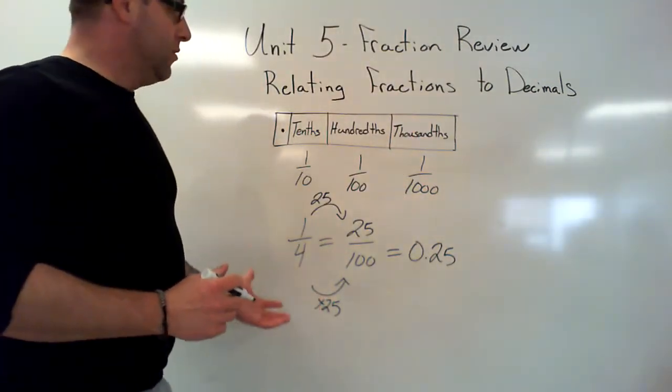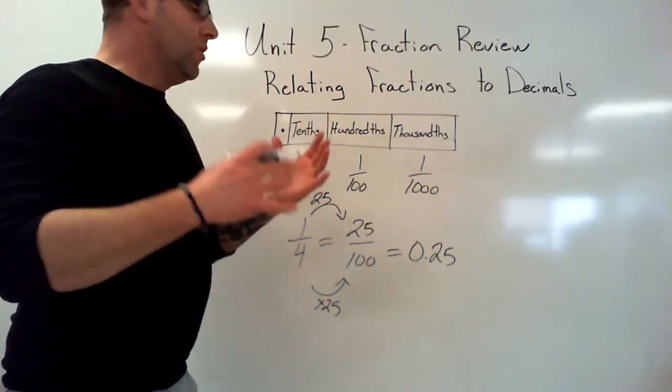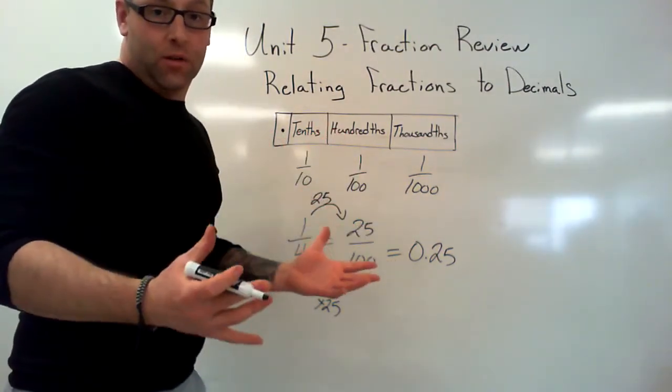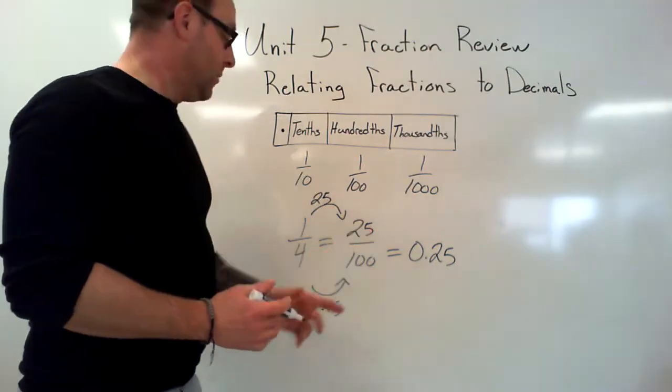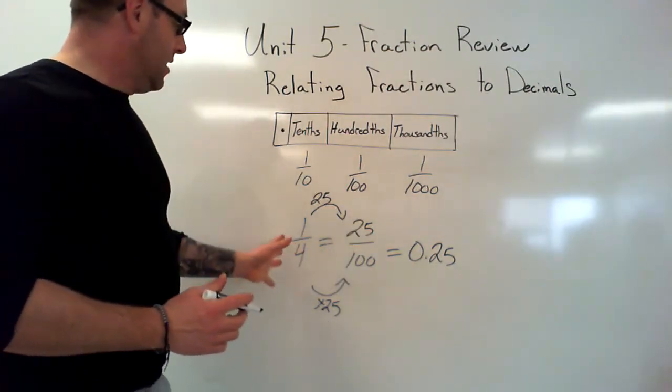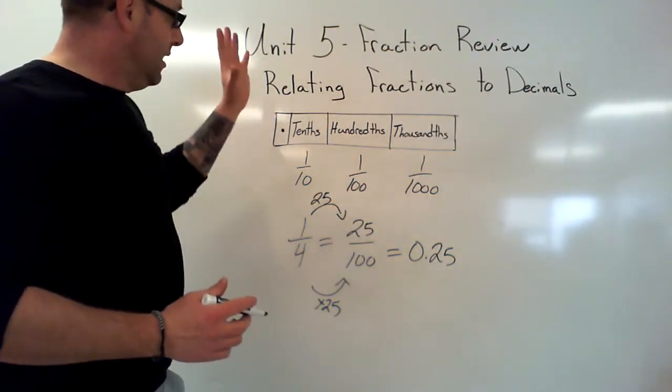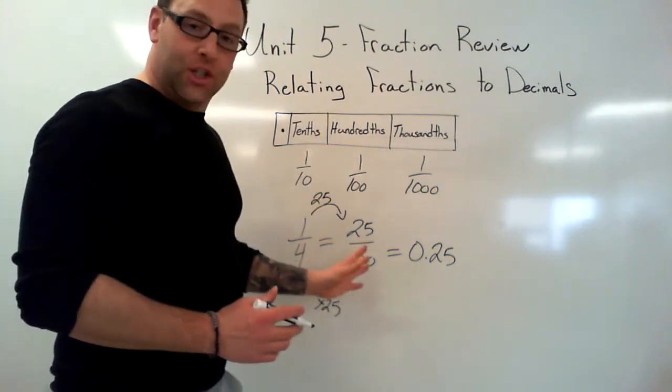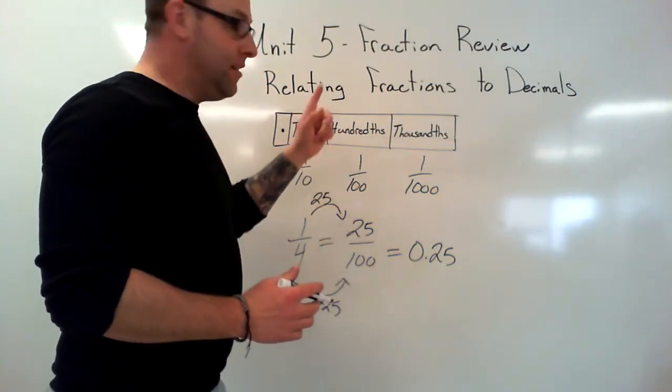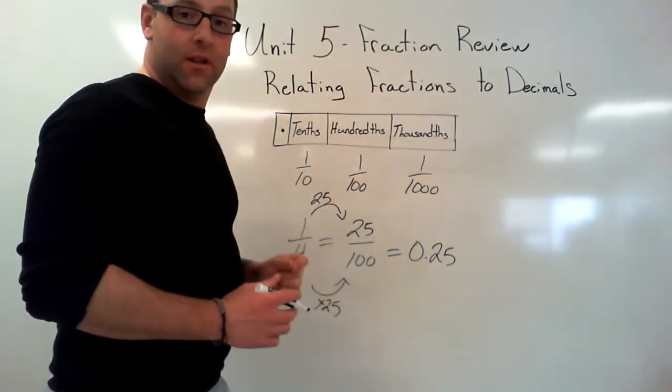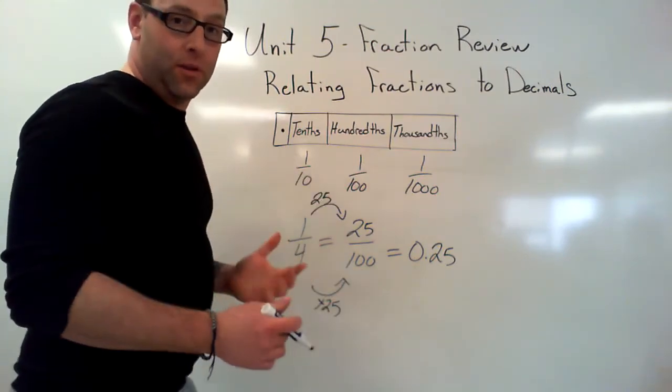Now we can do the same thing with a thousand, we don't need to go into that too much because it's exactly the same. As long as we understand that we need to have our fraction over 10, 100, or 1000, we can make a decimal.